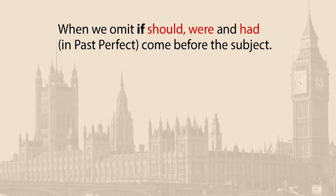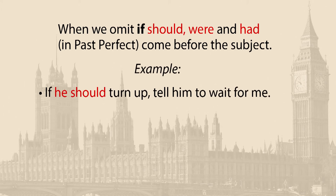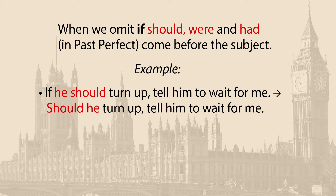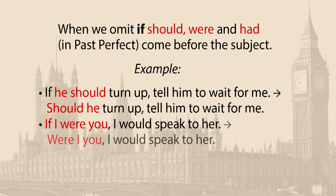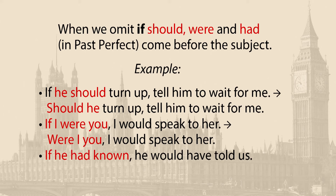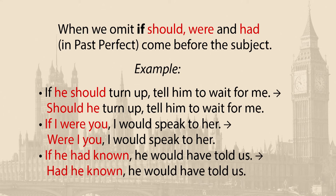Another thing to consider is that we can omit if. When we omit if, should, were, and had in past perfect come before the subject. For example: if he should turn up, tell him to wait for me — becomes: should he turn up, tell him to wait for me. If I were you, I would speak to her — becomes: were I you, I would speak to her. If he had known, he would have told us — becomes: had he known, he would have told us.